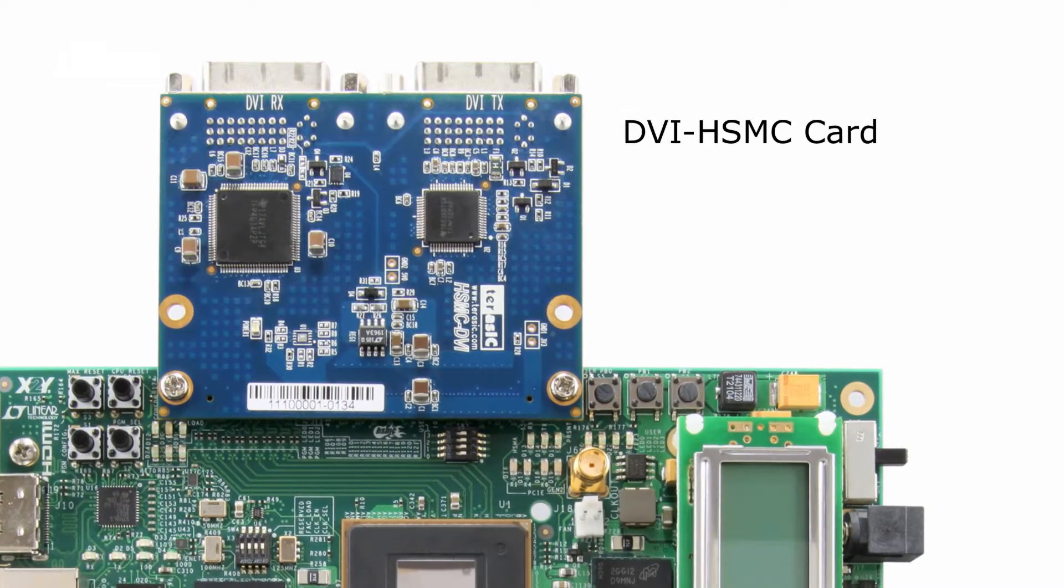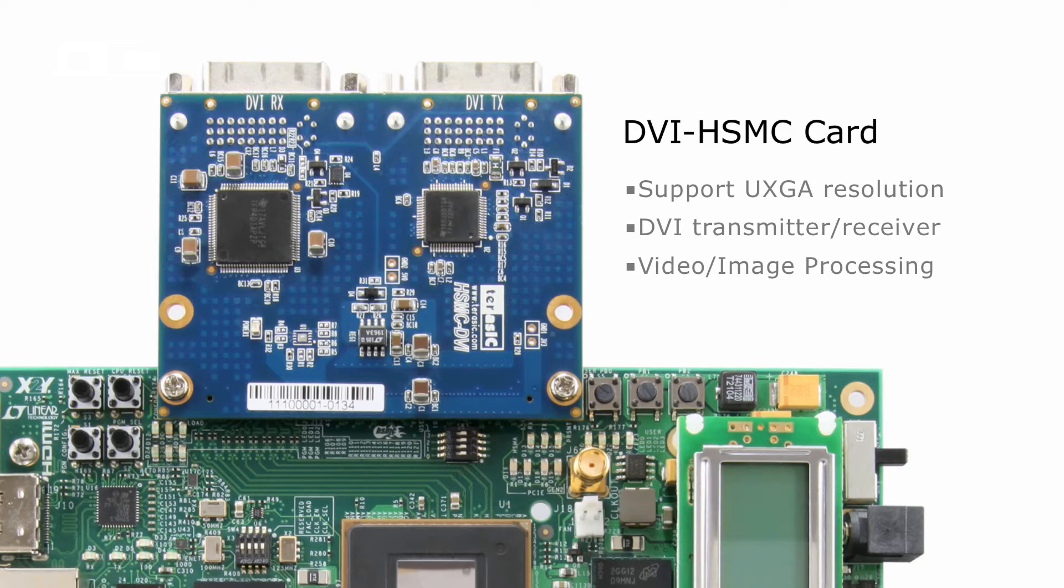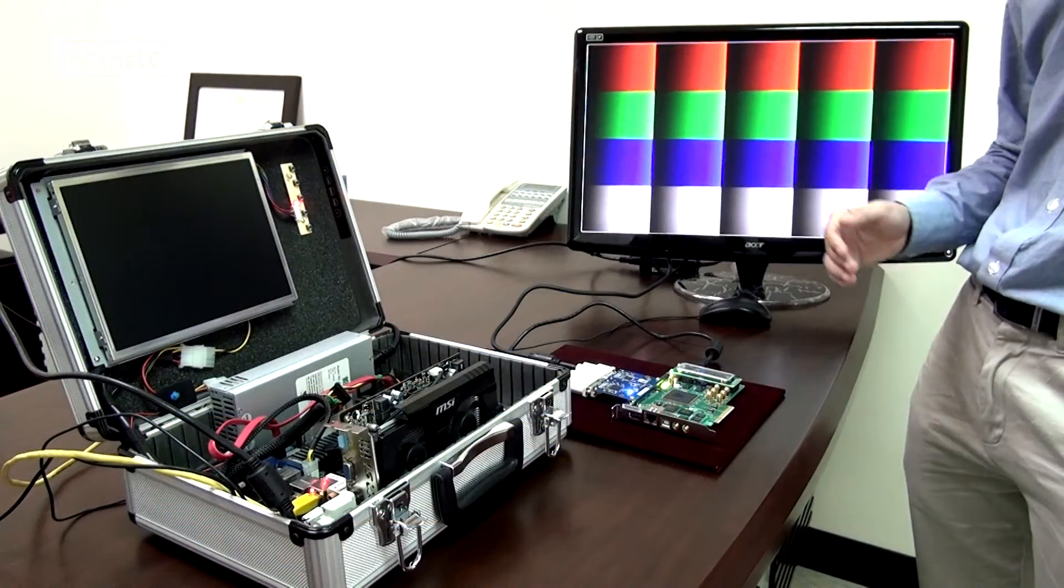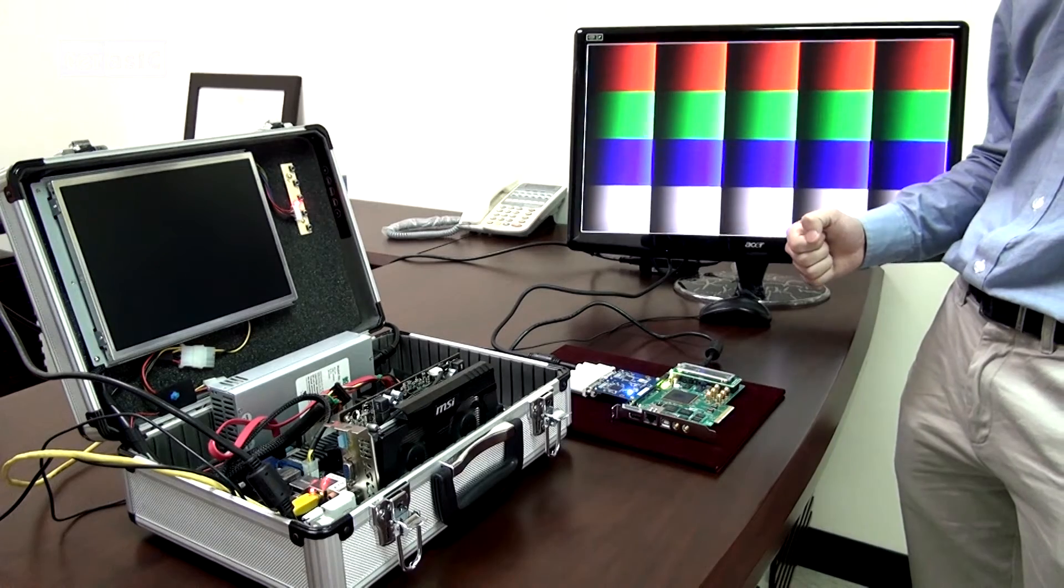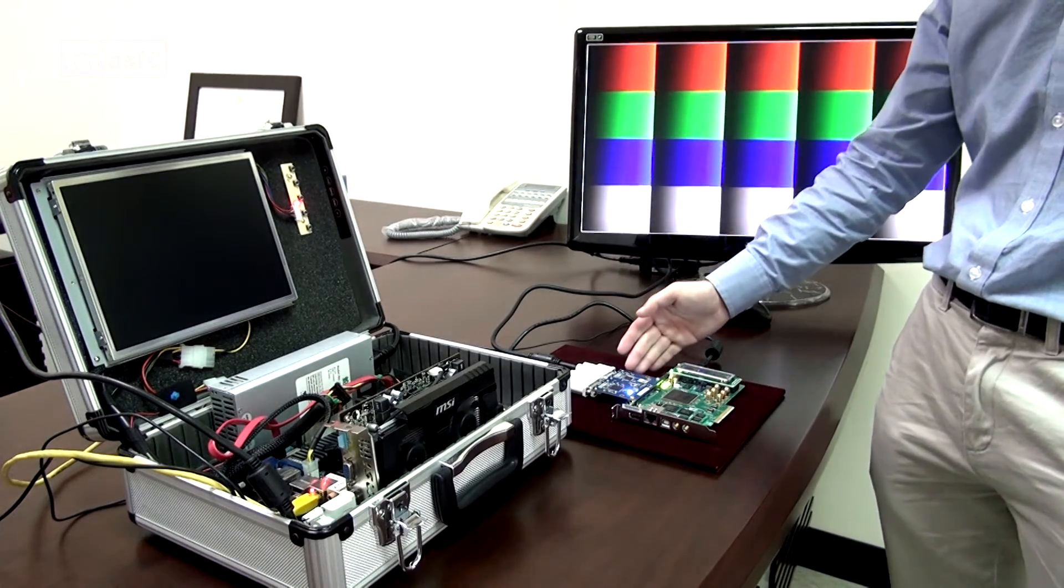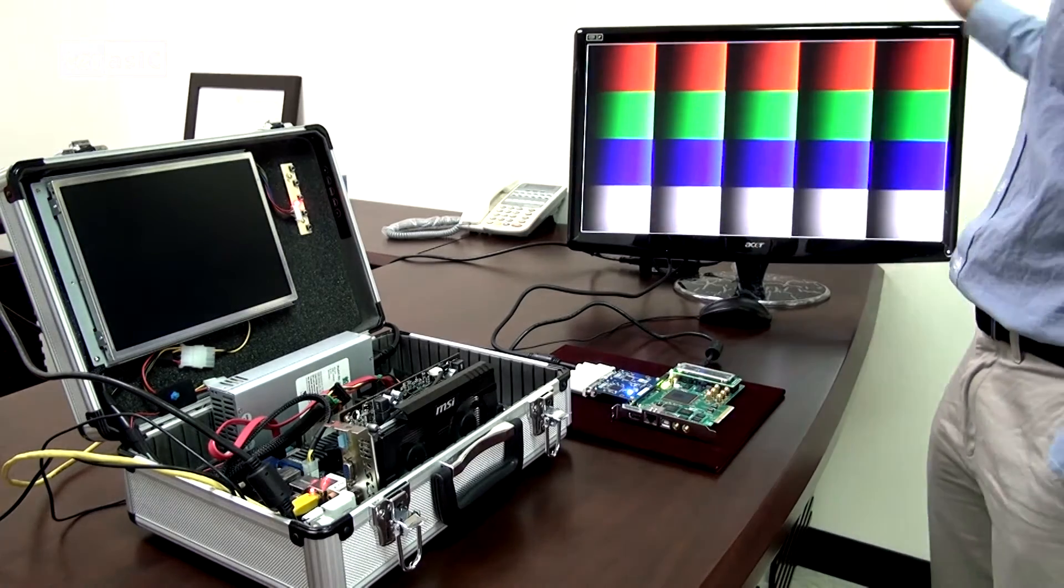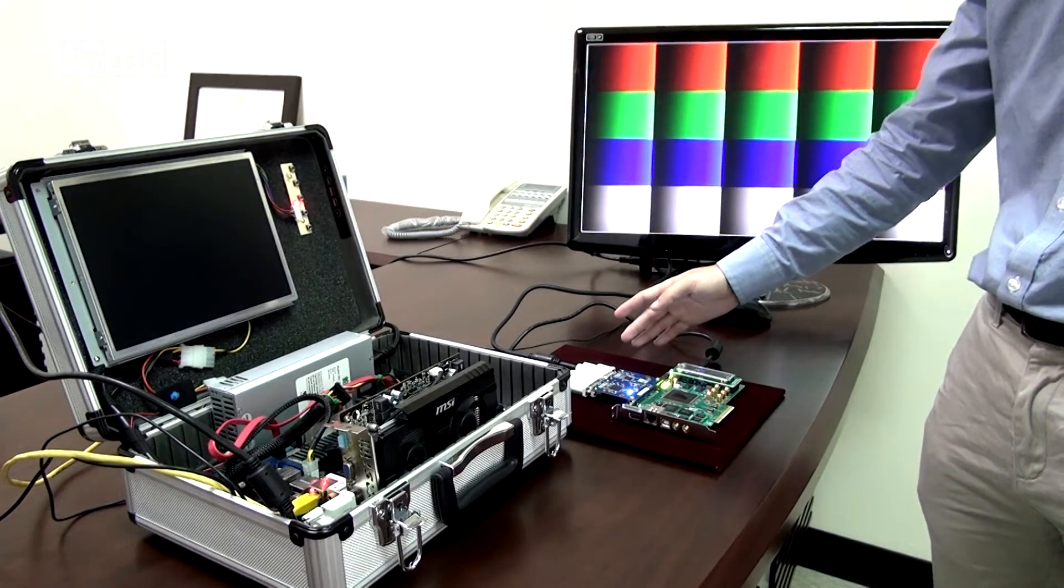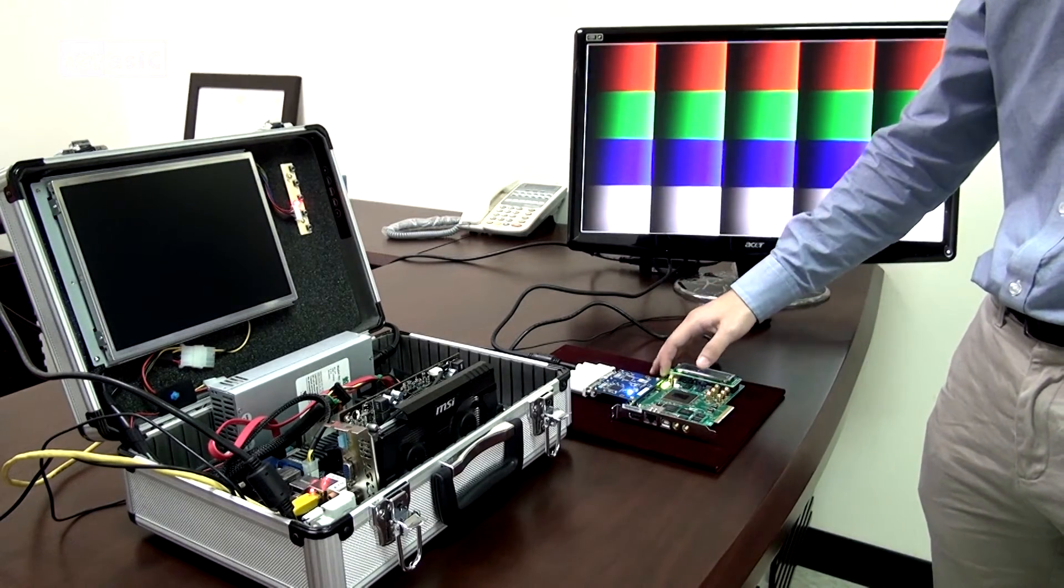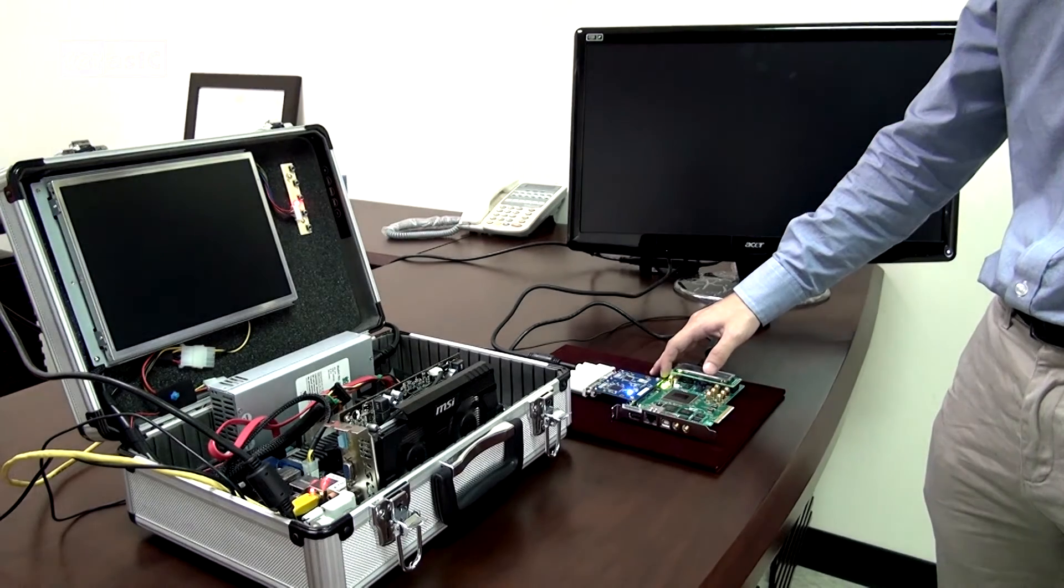Our first demonstration for today is a simple test pattern generator where we have the FPGA generating a test pattern out through our DVI daughter card. As you can see, we have connected a monitor up to our DVI port of the TX and we can cycle through different patterns by pressing our push button.